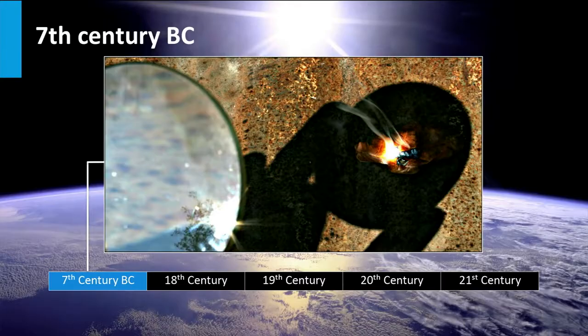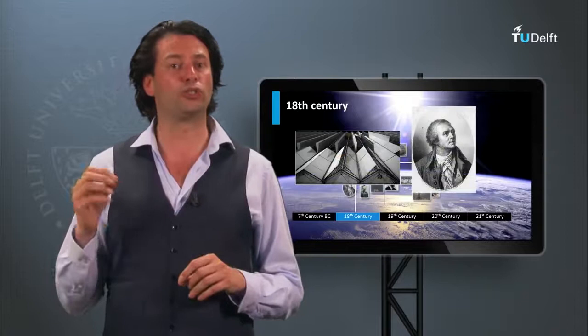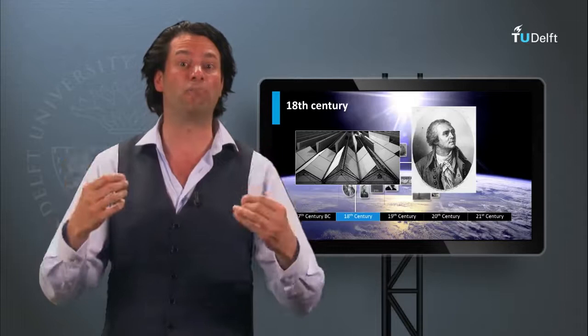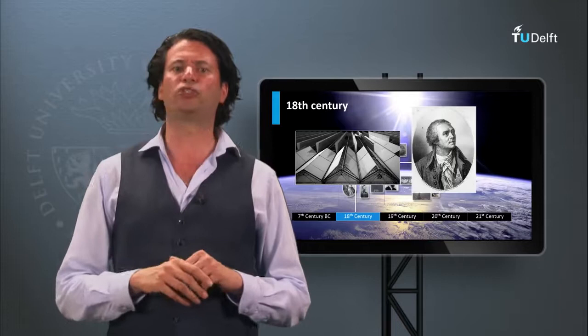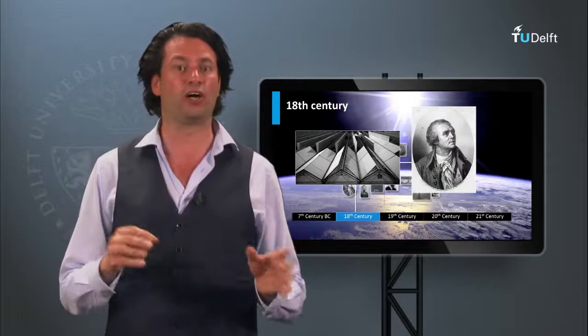In the 18th century, de Saussure built heat traps, which are a kind of miniature greenhouses. He constructed hot boxes consisting of a glass box within another bigger glass box, up to even 5 boxes. When exposed to direct solar irradiation, the temperature in the inner bottom box rose up to 108 degrees Celsius, warm enough to boil water and cook food. These boxes can be considered as the world's first solar collectors.